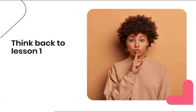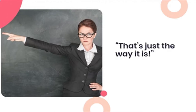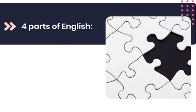There are many more examples of strange spelling patterns in English. Think back to lesson one — we learned about words with silent letters that don't get pronounced, like 'thumb' and 'foreign.' In schools, teachers usually tell their students, 'That's just the way it is.' But let's explore why it is the way it is. To do that, we have to explore the four parts that make up English: Germanic, French, Latin, and Greek.